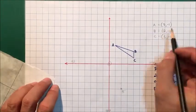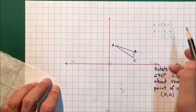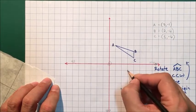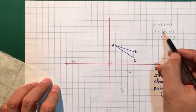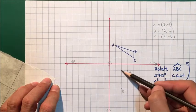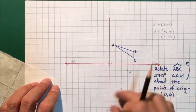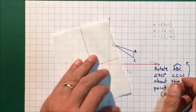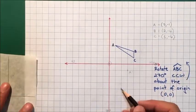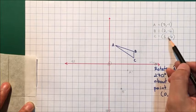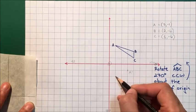A is (3, -1): 1, 2, 3, and then 1 down, so this is going to be A'. B is (2, -4): 1, 2, and then 1, 2, 3, 4 down. So that method we used before by lifting the edge of the tracing paper up did work just fine. And C is (1, -4), so 1 across and 1, 2, 3, 4 down. That's going to be C'.